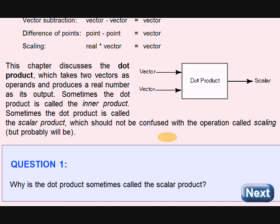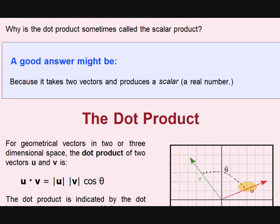Why is the dot product sometimes called the scalar product? It is because it takes two vectors and produces a scalar. A scalar is a real number. Great. That is the dot product.